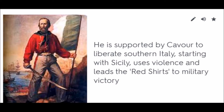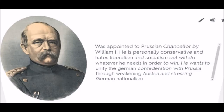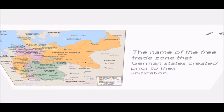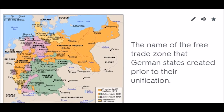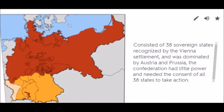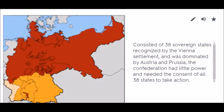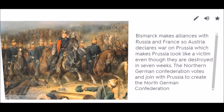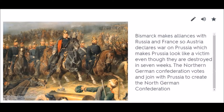Otto von Bismarck: Appointed as Prussian Chancellor by William I. He is personally conservative and hates liberalism and socialism but will do whatever he needs to win. He wants to unify the German Confederation with Prussia by weakening Austria and stressing German nationalism. Zollverein: The name of the free trade zone that German states created prior to unification. German Confederation: Consisted of 38 sovereign states dominated by Austria and Prussia, with little power requiring consent of all 38 states. The Austro-Prussian War: Bismarck makes alliances with Russia and France so Austria declares war on Prussia, making Prussia look like a victim even though they win in seven weeks. The Northern German states vote to join Prussia, creating the North German Confederation.